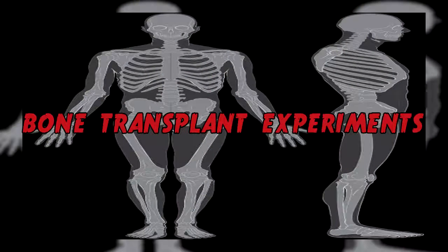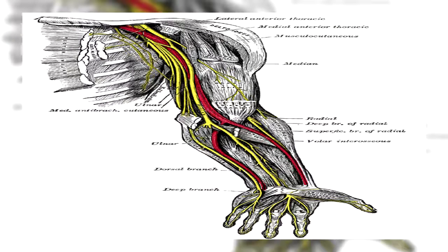Bone transplant experiments: from September 1942 to December 1943, experiments were conducted to study bone, nerve and muscle regeneration and bone transplants from one person to another. Nazi doctors removed bones, muscles and nerves from victims without the use of pain relief. The cruel experiments led to victims having limbs amputated, and many were mutilated and exposed to excruciating pain. Every attempt to transplant a limb or joint was a failure. Many victims died from the experiments and the ones that survived had permanent disabilities.